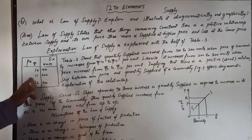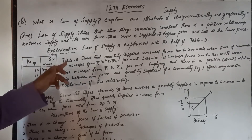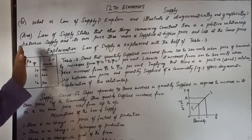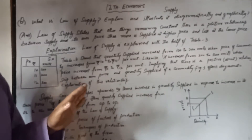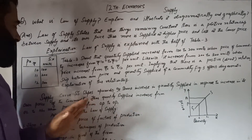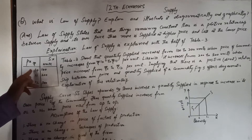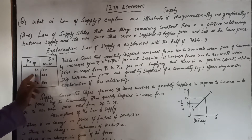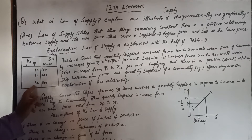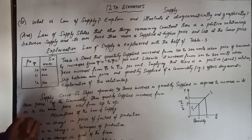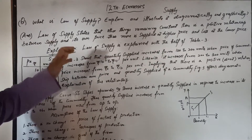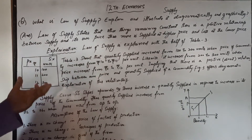If the price is 10, supply is 100. If the price increases to 11, then the supply of the commodity increases to 200. If the price is 12, then supply increases to 300. So this means when the price is more, supply increases; when the price is less, supply decreases.